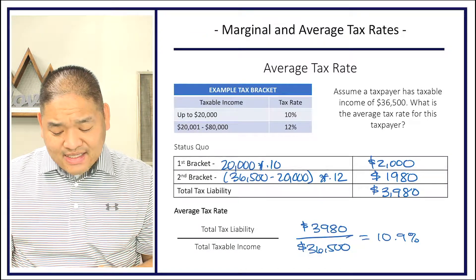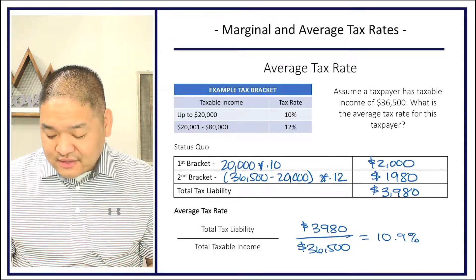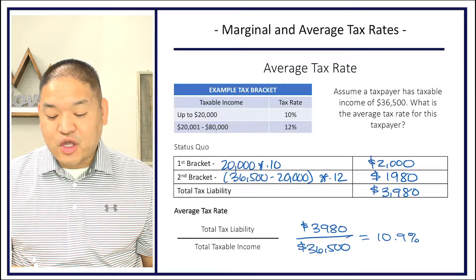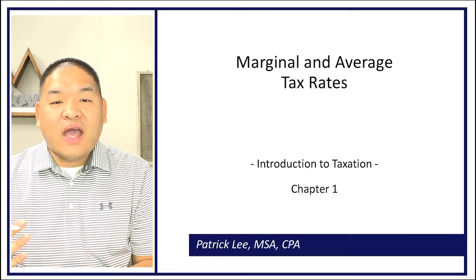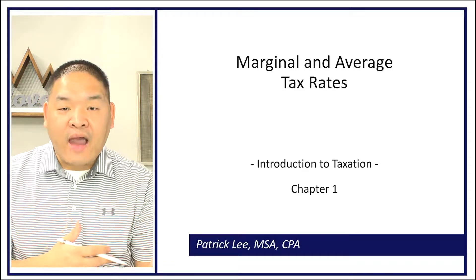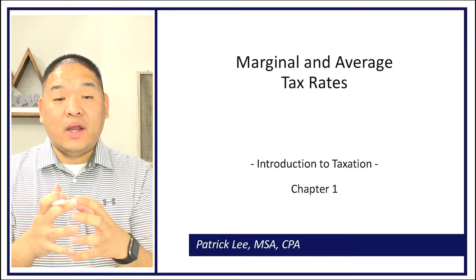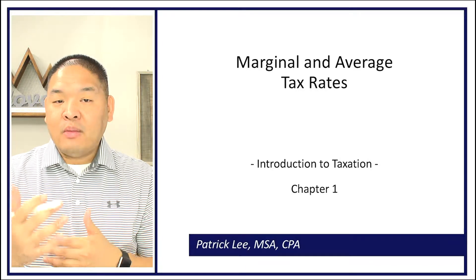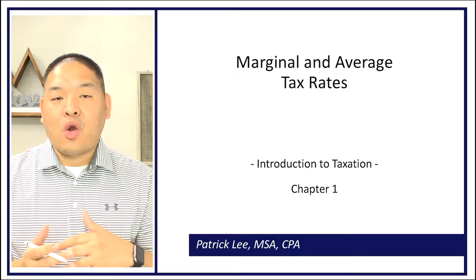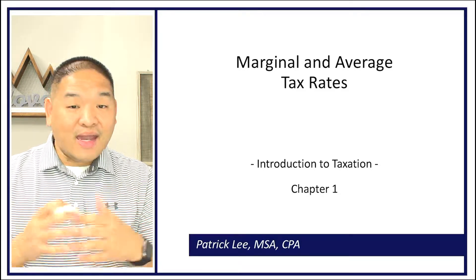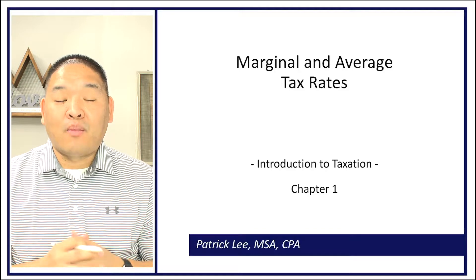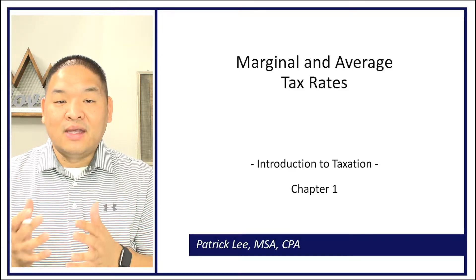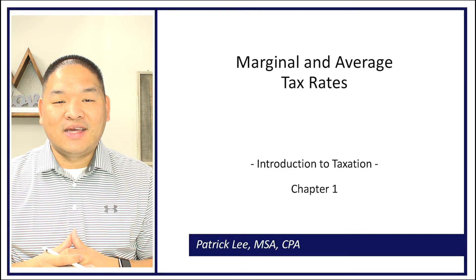So that's how we calculate marginal and average tax rate. You find the tax liability and divide by total taxable income for the average, and compare tax differences on incremental income for the marginal. Now that you understand what goes into these calculations, the next time you hear about average or marginal tax rates in the news, you'll have a better idea of how they're really calculated. We'll see you in the next video.